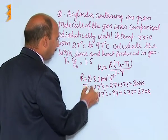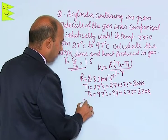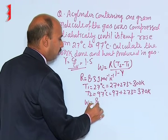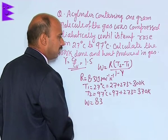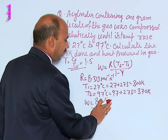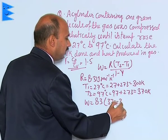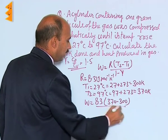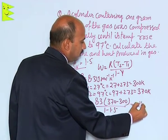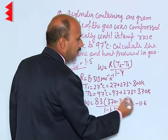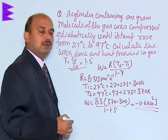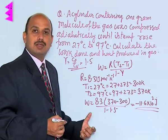We have to get work done, gamma is already given to you here. Work done is equal to 8.3 into 370 minus 300 divided by 1 minus 1.5, and this you will be getting here minus on calculating this 11.6 into 10 raised to power 2 joule. But this work done is coming negative because the work is being done on the system.